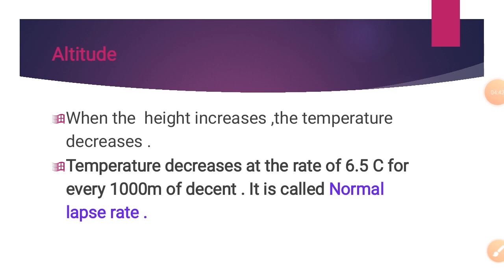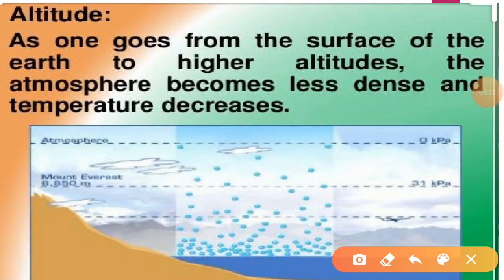The next factor is altitude. Altitude means height. When the height increases, the temperature decreases. Temperature decreases at the rate of 6.5 degrees Celsius for every 1000 meters of ascent — this is called the normal lapse rate. Students, this is important; please note it down. Hence, places in the mountains are cooler than places on the plains. As one goes from the surface of the Earth to higher altitude, the atmosphere becomes less dense and temperature decreases.